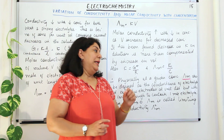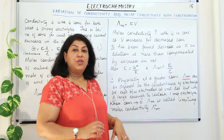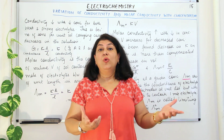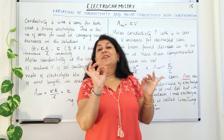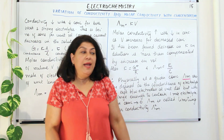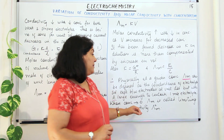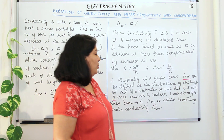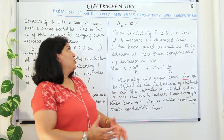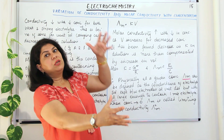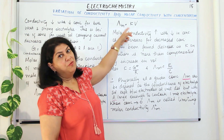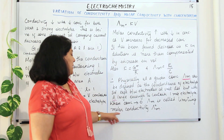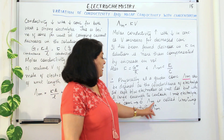There is one more term to introduce before wrapping up. When the concentration approaches zero — meaning the solution is so dilute that concentration is approximately zero — the molar conductivity at that point is known as limiting molar conductivity. Because if the concentration is so low, the volume increases so much that λm reaches a maximum and cannot go beyond that. This limiting molar conductivity is written as lambda-naught-m (λ°m).